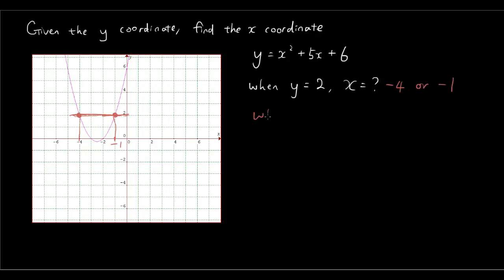Let's try another number. When y is equal to 4, what is x equal to? Going to where y is 4 on the graph, again there are two answers. For when y is 4, x is equal to about negative 0.5 according to our graph, and there is another answer of about negative 4.5. You can see that when I give you a y coordinate you can get two answers for x because it's a parabola. The only difference is at the turning point where there is only one x coordinate for that y value.